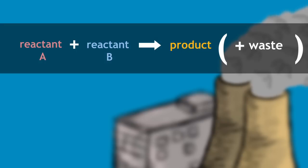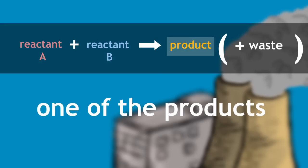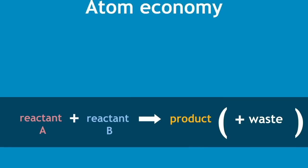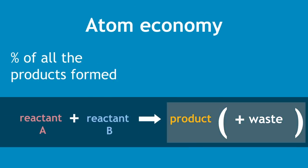When a reaction is carried out in industry, we are normally only interested in one of the products. The other products are sometimes waste. Atom economy simply shows us the amount of product that was useful as a percentage of all the products that were formed.